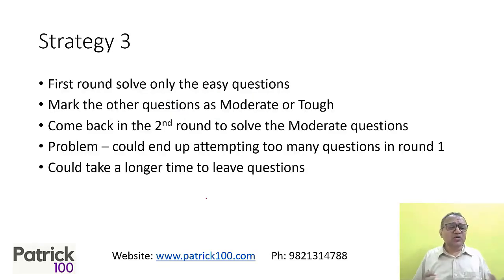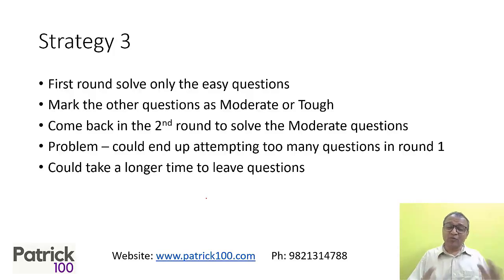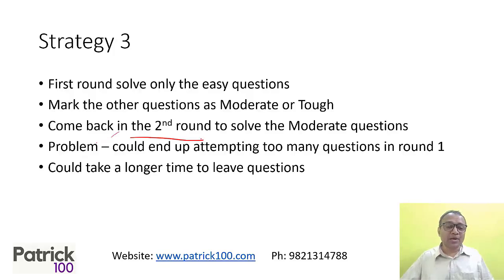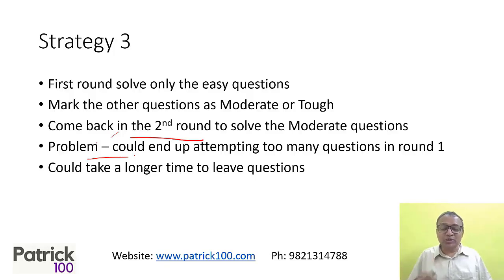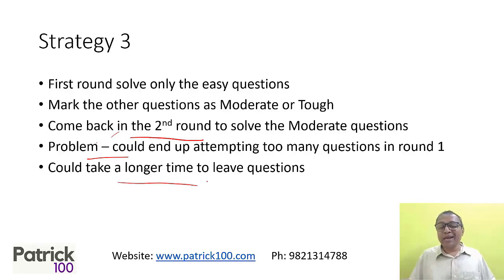Third strategy: solve only the easy questions as and when you encounter them. Learn to leave moderate or tough questions, and mark which questions are moderate or tough, but only solve easy questions in the first pass. What we are doing is combining elements of the previous two strategies — we're not only going through the paper and marking easy, medium, tough, but also solving the easy questions. Then we come back in the second round to solve moderate level questions. The problem could be that you end up attempting too many questions in round one, getting too engrossed and losing track of time, which means you may not complete the paper. It could also take longer to leave questions since you're trying to solve during the first round.